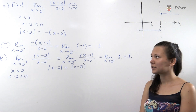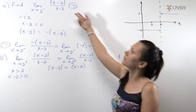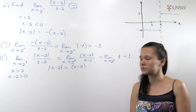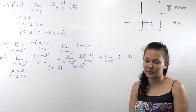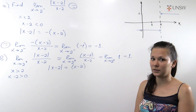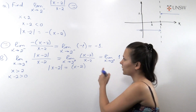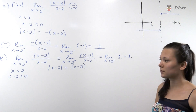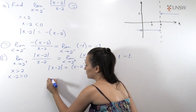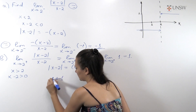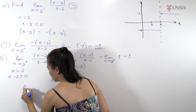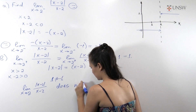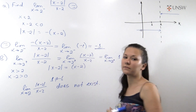In part c we need to answer whether the two-sided limit of our original function exists. To answer this, we recall that if both one-sided limits exist and are equal to the same number, then the two-sided limit exists and equals that number. But in our case, the left-hand limit is minus 1 and the right-hand limit is 1, which are not equal. Therefore, the limit as x goes to 2 of our function does not exist, which is the final answer.